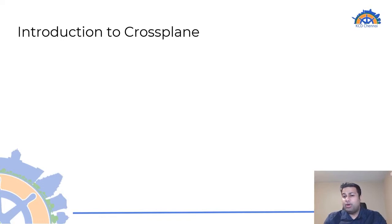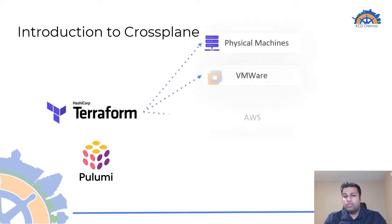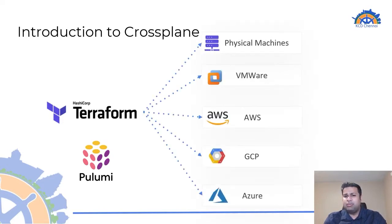When we start talking about infrastructure provisioning, one of the commonly used tools today is Terraform. And then there are tools such as Pulumi that have gained popularity in the last few years. These are some fantastic tools that allow us to provision and manage infrastructure on almost all platforms, such as AWS, Azure, GCP, or on-premise infrastructure such as VMware. And while these are some really great tools, they do have certain limitations.